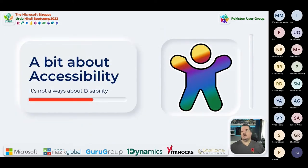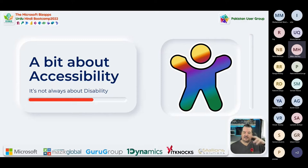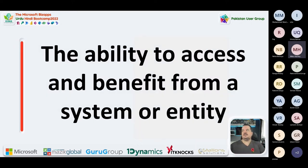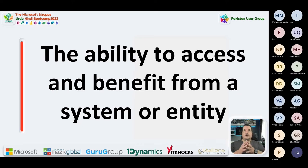A quick bit about accessibility - because when you say the word accessibility, the first thing people think of is disability, and they think of wheelchairs. But the definition of accessibility is the ability to access and benefit from a system or entity. Basically, accessibility is all about making it easy for people to be able to use the tools we build and the software we use.